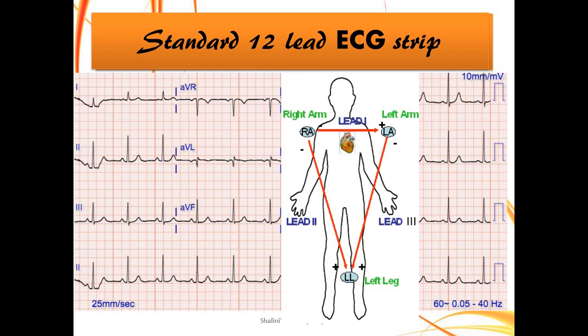Correlating precordial and limb leads to the ECG strip: lead 1, 2, 3, AVR, AVL, and AVF are the six limb leads. Electrodes are placed on the right arm, left arm, and foot — depicted as AVR, AVL, and AVF. A stands for augmented vector — augmented vector right, left, and foot. These are called augmented because they are mostly calculated alongside leads 1, 2, and 3.